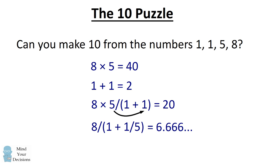So we could do that by reducing the denominator and changing the sign to a minus. And now magically we've gotten to our solution. 8 divided by 1 minus 1 fifth is equal to 10.